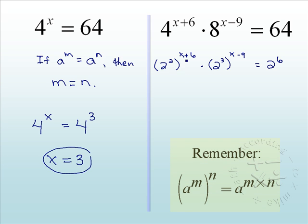Notice we have a power to a power, so we're going to multiply. So we'll do 2 times x and 2 times 6. That will give us 2 to the 2x plus 12.